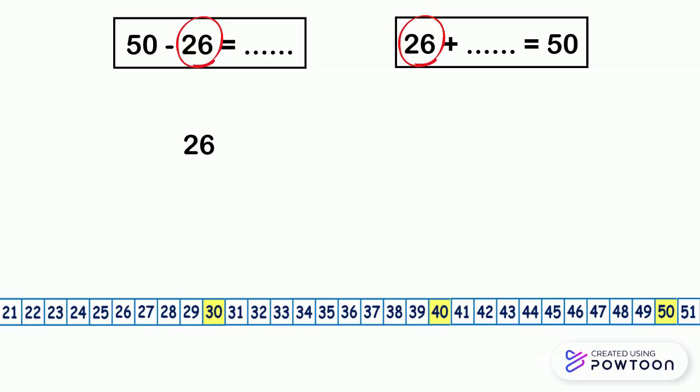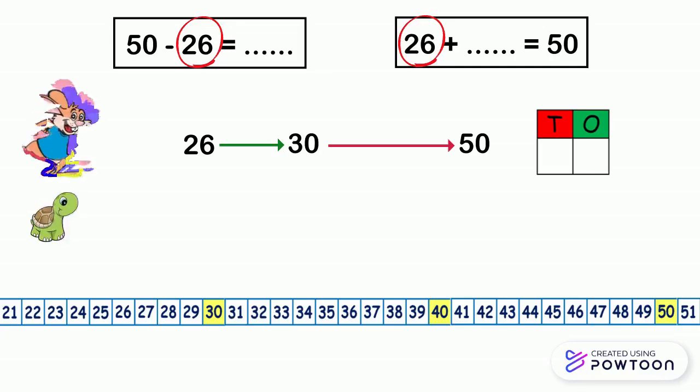We jump to the first whole tens after 26, which is 30. Then we keep jumping till 50. And of course, we need to use the tens and ones place value chart. By using the turtle and the rabbit, we can find the tens digit and the ones digit.